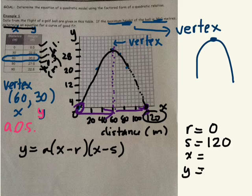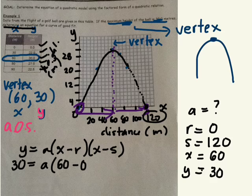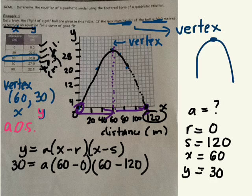What's the X value of the vertex? What's the Y value of the vertex? So we don't know A. We've got to find A. So plug in all these values and solve for A. So Y is 30. So 30 equals A. X is 60. R is 0. X is 60. S is 120. Simplify and solve for A.